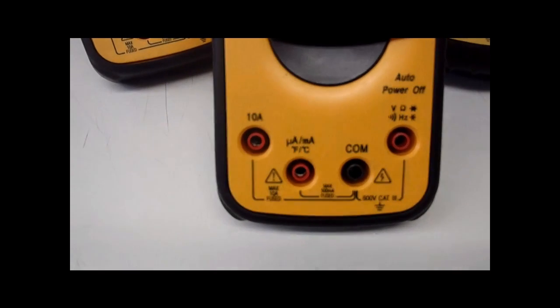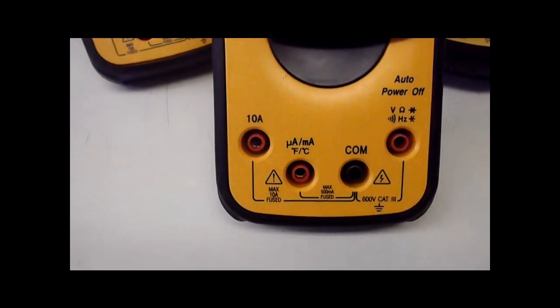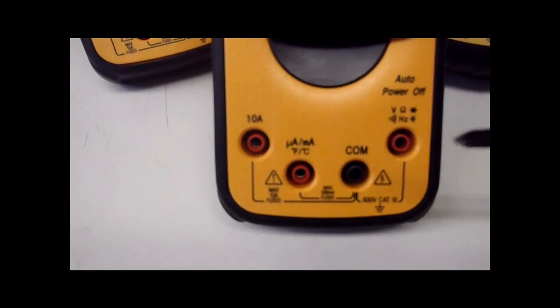Now one of the first features you should look for in a multimeter are the terminals on the bottom. A really cheap meter will only have two terminals, and that will be your common and everything else. And that represents a really cheap, under-designed multimeter.